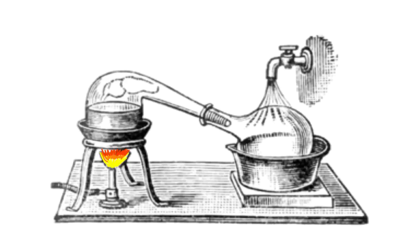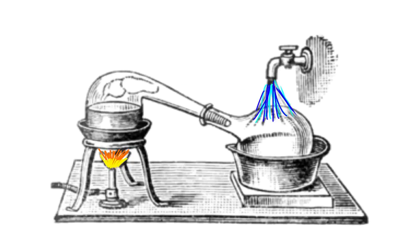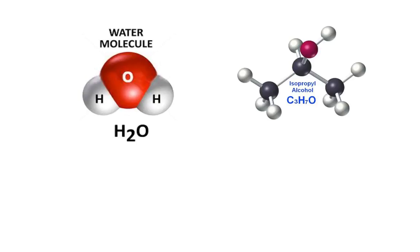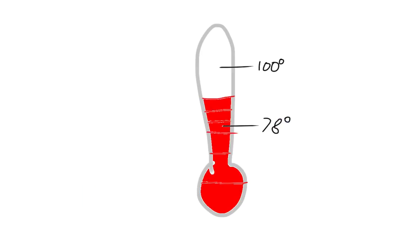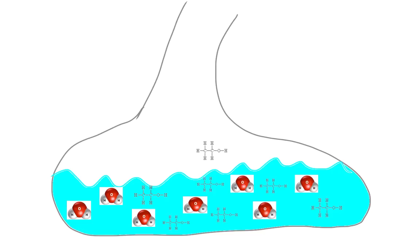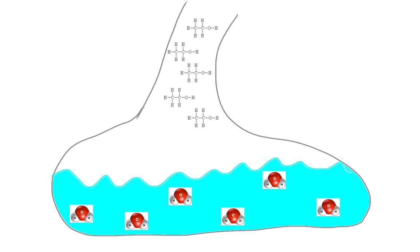Here we see our beer or wine solution being heated until it produces vapors. Those vapors condense on the right-hand side because that vapor has now come in contact with the chilled chamber wall. Since water boils at 100 degrees Celsius and alcohol at a mere 78 degrees Celsius, it is a master distiller's job to ensure that our solution stays somewhere in between the two. This allows alcohol vapor to be released while the remaining water stays in the distillation pot.